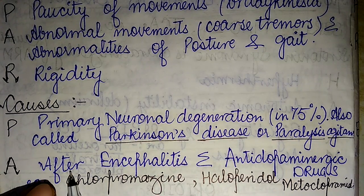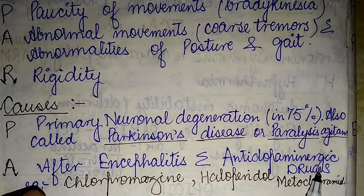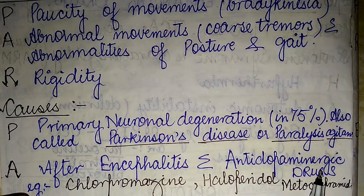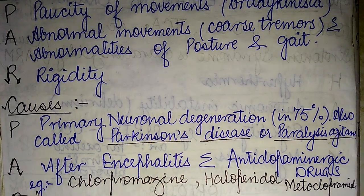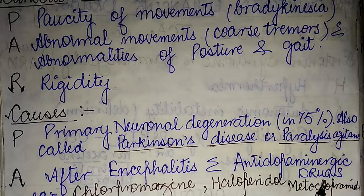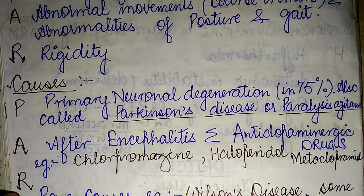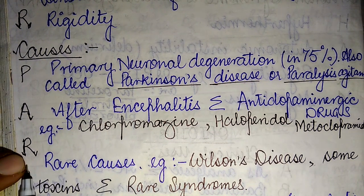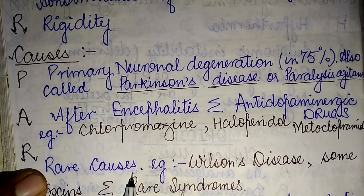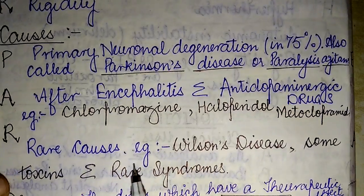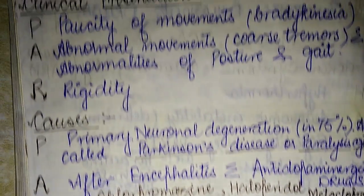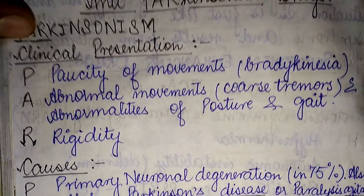A can be remembered as 'after encephalitis.' Anti-dopaminergic drugs can also precipitate parkinsonism — examples include chlorpromazine, haloperidol, and metoclopramide. R stands for rare causes, which include Wilson's disease, certain toxins, and rare syndromes that can also lead to the development of parkinsonism.